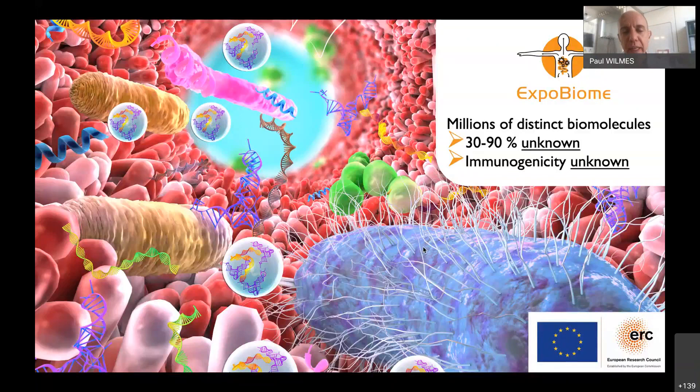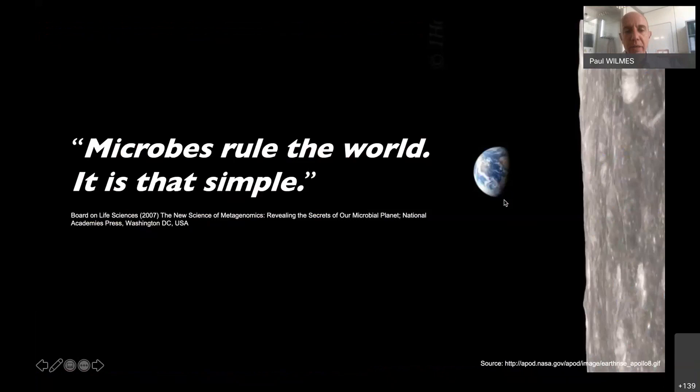One of the projects really trying to get at the molecules is my ERC project, where we are specifically looking at the millions of biomolecules produced by microorganisms in and on us, of which the vast majority is currently unknown — also unknown in relation to the triggering of the immune system and how differences may be the cause of inflammation. Chronic inflammation is one of the key hallmarks of all of the diseases I just highlighted.